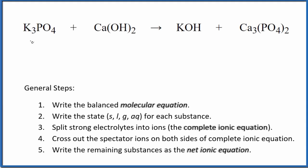Let's write the balanced net ionic equation for potassium phosphate plus calcium hydroxide. The first thing we need to do is balance the molecular equation. I've already looked at this a little bit and it seems the best thing to do is put a two here. I want to get two phosphates to balance these two phosphates. That's a good place to start.